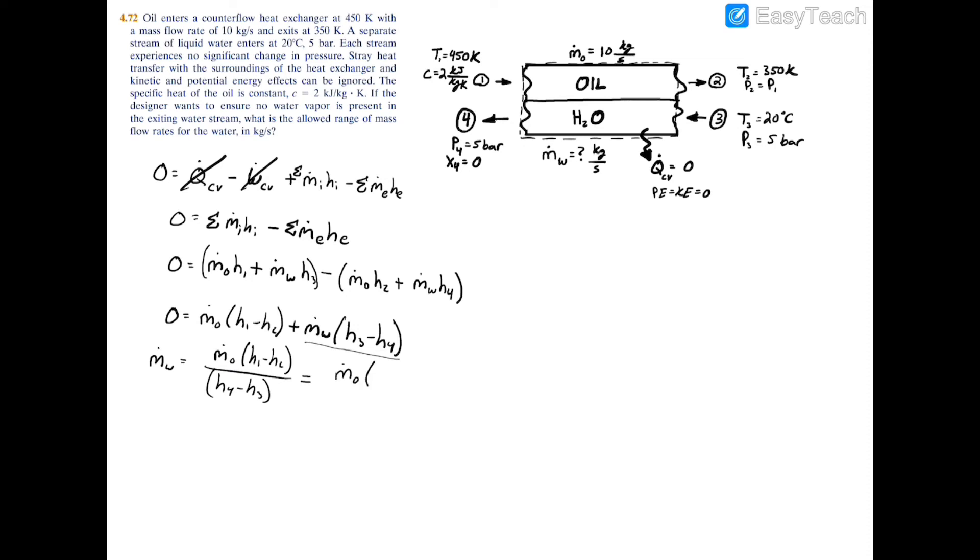We're going to use the equivalent substitution for enthalpy or the approximation, so we'll have this equal to the mass flow rate of the oil times the specific heat. It's given as just c and that c is equal to 2 kilojoules per kilogram Kelvin.